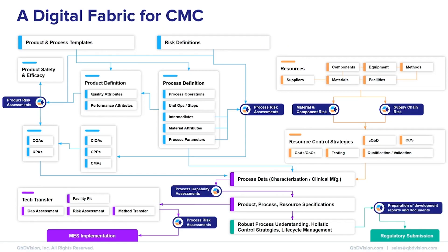Returning to the universe of information, this approach of atomizing, assembling, and linking data connects digital objects using digital threads to create a digital fabric for CMC knowledge. Now, if there is a change to a material for a process, the impact of this change on critical quality attributes and hence patient safety and efficacy can be assessed quickly because the connections or digital threads can be followed through the maze to see this relationship.